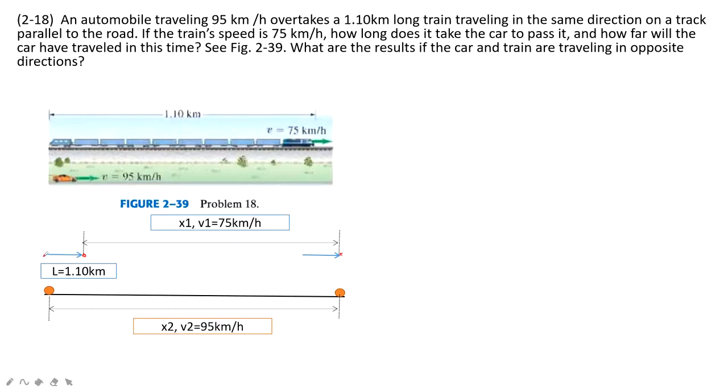In this case, at first we can see this car is at the tail of the train. At final position, this car is at the head of the train, just overpassing it. So from this picture, it is really easy to find the relationship. L plus x1 equals x2. We must consider the length for this train. So L plus x1 equal to x2.